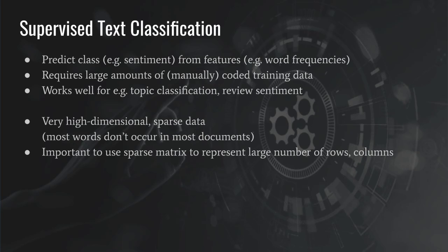You have worked with document term matrices before, and very often they are very high dimensional, in the sense that you have thousands or tens of thousands of columns, and the data is also very sparse. That means that of your tens of thousands of columns, most of the words don't actually occur in most of the documents. Because the matrix is so large — it can be tens of thousands by tens of thousands — it is very important to keep using a sparse matrix representation. What that means is that the computer doesn't store all the zeros; it only stores the non-zero entries. So if only one percent of your words are used in an average document, the size of your matrix is actually reduced by 99%, which will drastically reduce memory consumption but also make everything a lot faster.